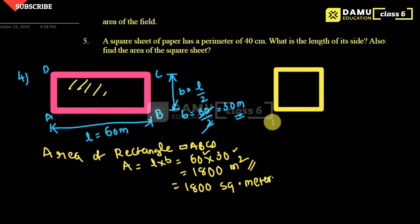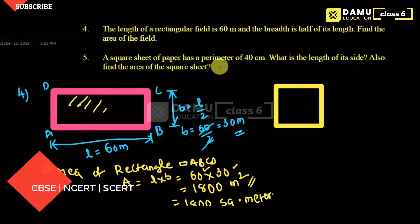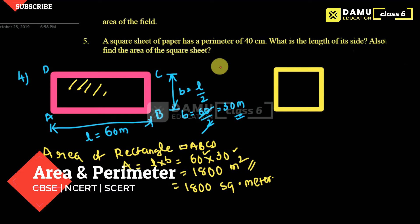Next, our fifth question: A square sheet of paper has a perimeter of 40 centimeters. What is the length of its side? Also find the area of the square sheet.